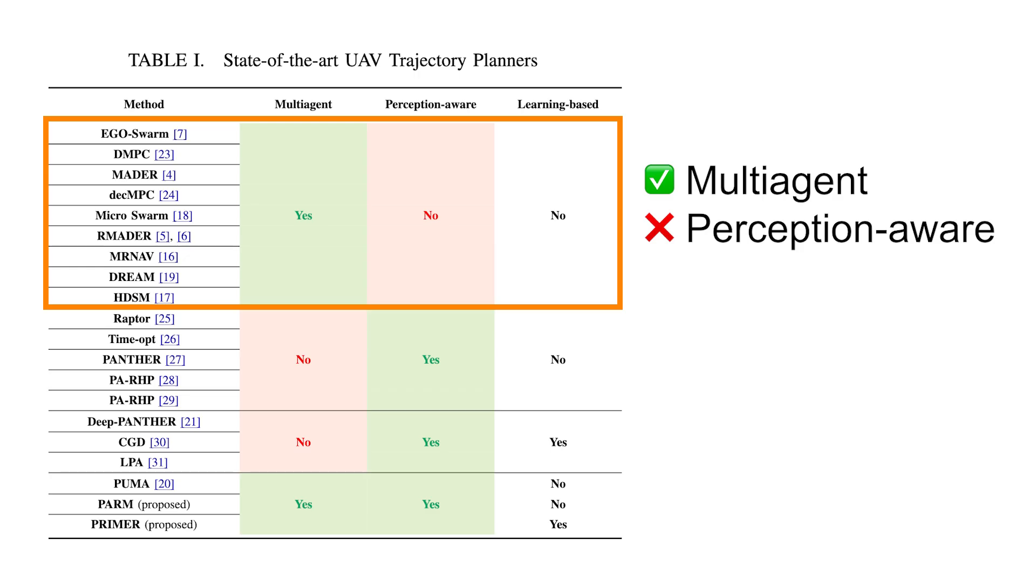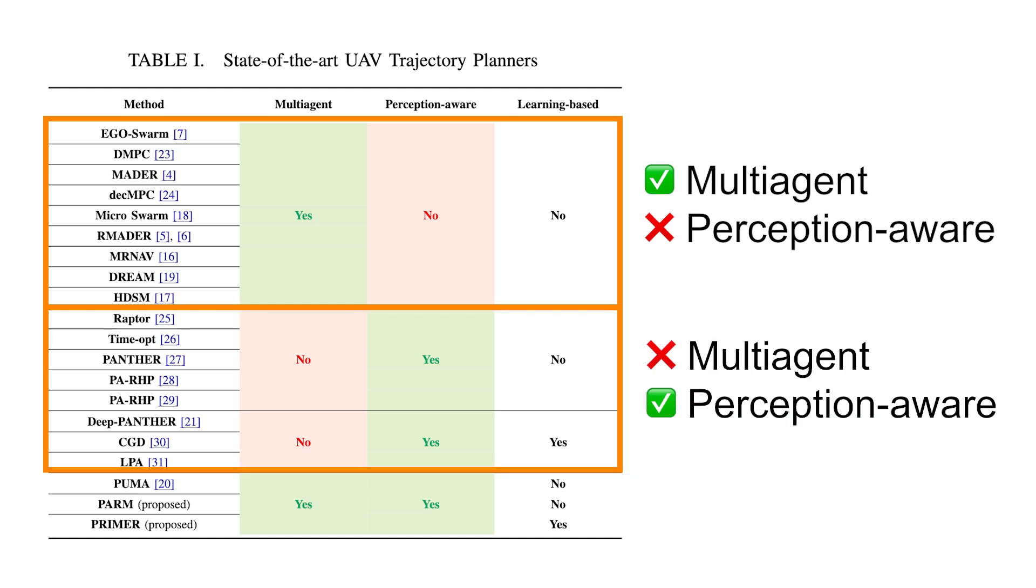Now, let's take a look at state-of-the-art approaches. The first category is multi-agent planners. However, most of them are not perception-aware. The second type is perception-aware trajectory planners. However, they are usually single-agent planners.